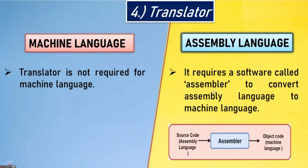Fourth point — translator. A translator is not required for machine language. In assembly language, it requires a software called an assembler to convert assembly language into machine language.